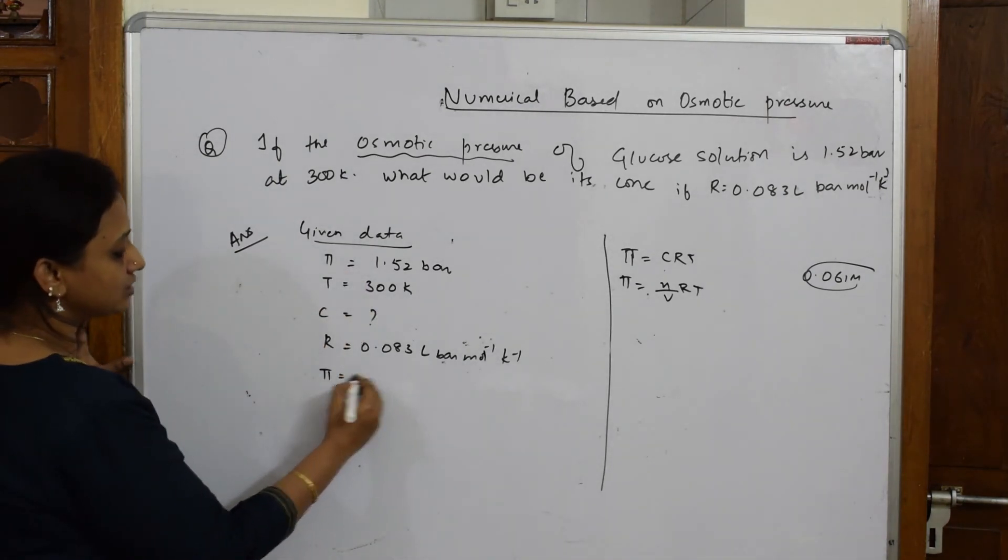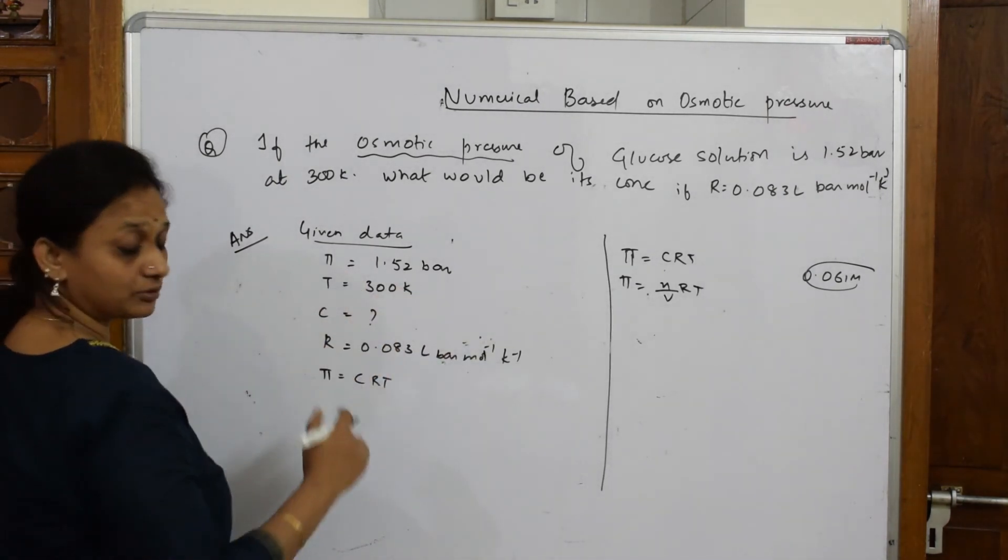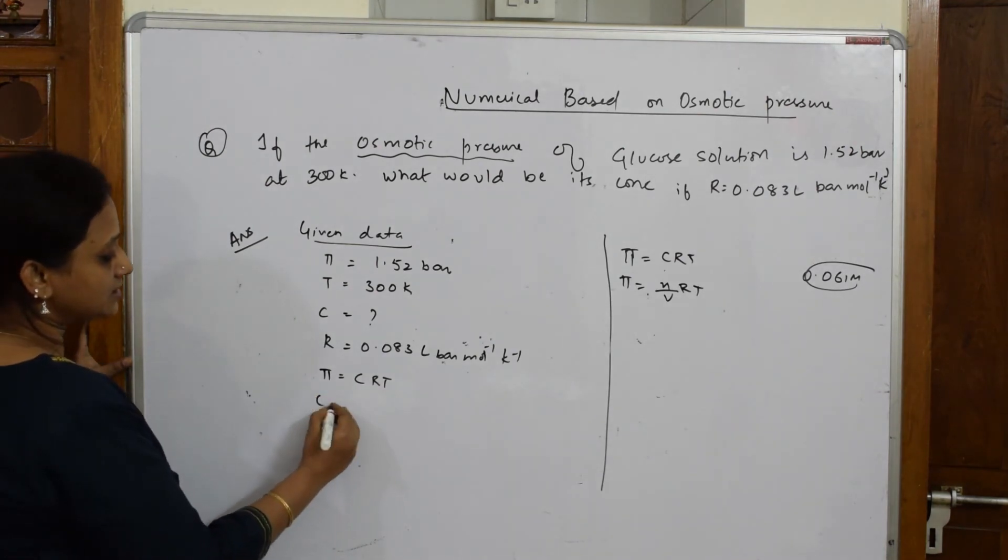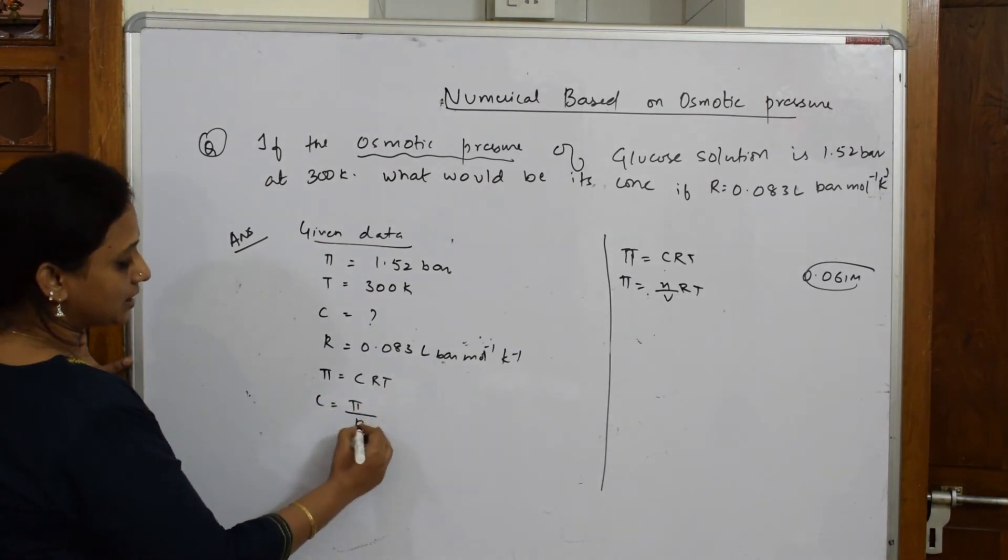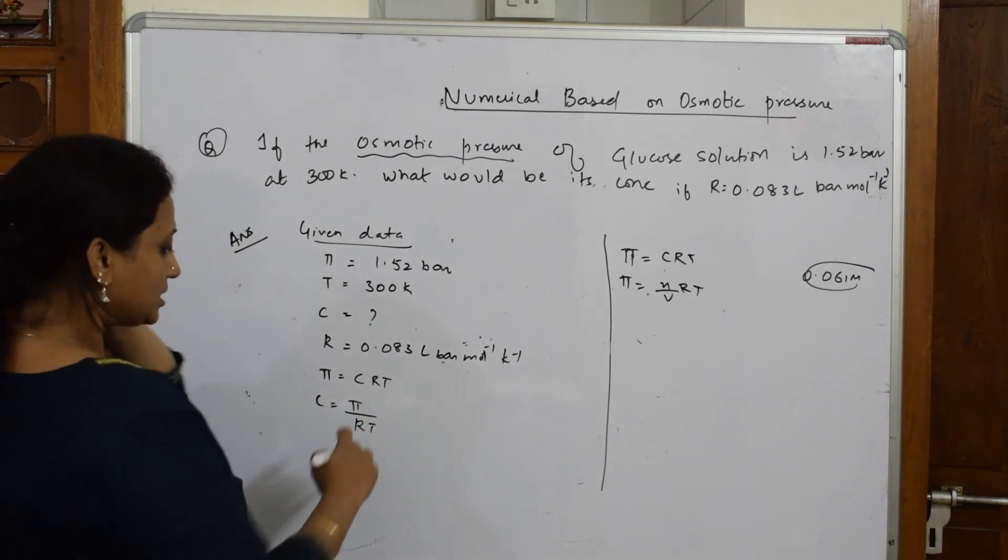So here π equals CRT. I have to find C. C equals π by RT. Yes. So what is given to you?